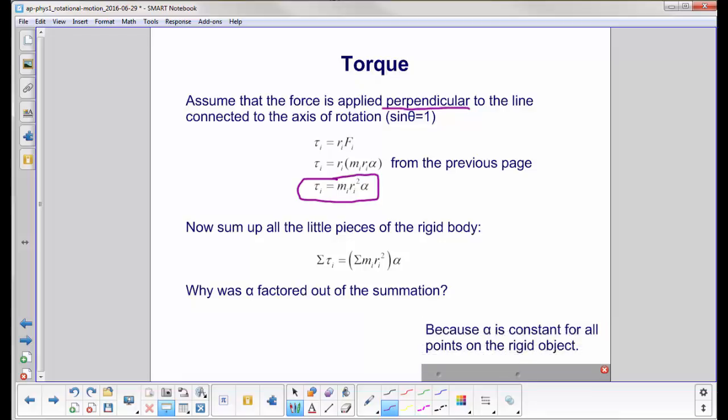Alpha is constant for all points on the rigid object, just like omega is. Again, one of the values of using this approach to rotational motion. Things are constant wherever you are on the object, and they can be pulled out of summations. They can be factored out.